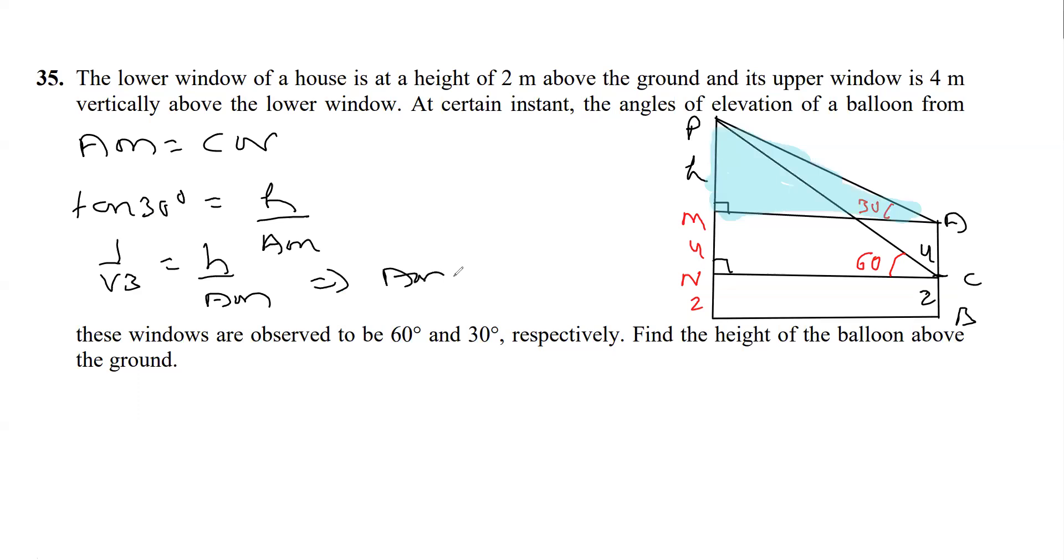By cross multiplication, I can say AM is root 3 times H. That is equation 1. Now similarly, if I apply the other, we consider the other triangle. This being a right angle triangle, we can apply trigonometric ratio in this triangle as well.